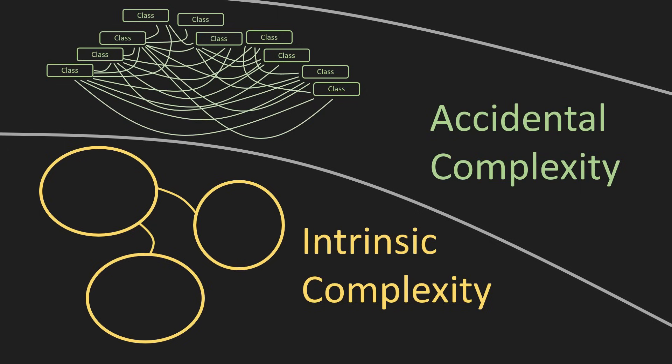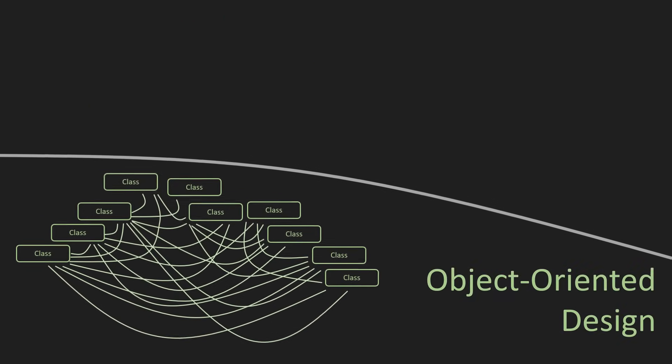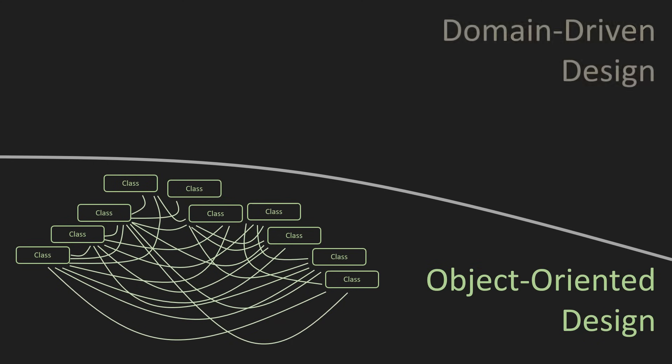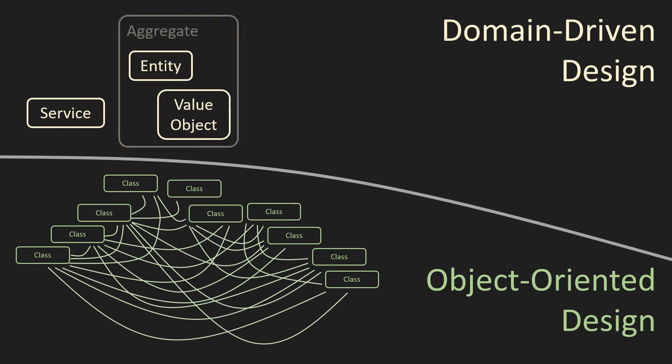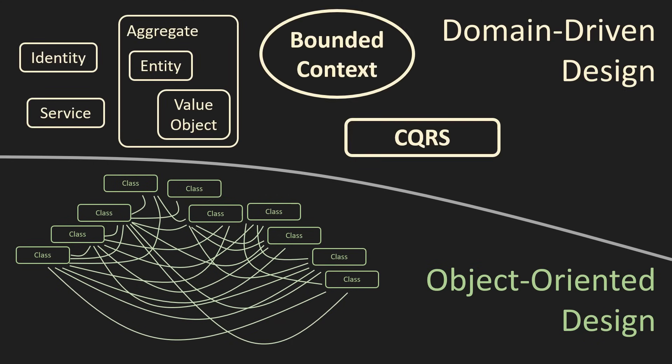This is where domain-driven design comes in as one possible attempt at reducing accidental complexity in developing complex software systems. Listen to me very carefully — it is one possible attempt at reducing complexity. Not the only one, not even the best one we have, and it will not make the complexity go away. But it will help, and here is how it does its magic.